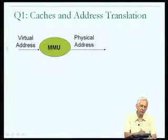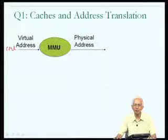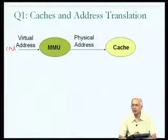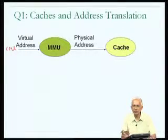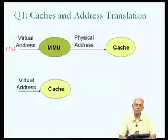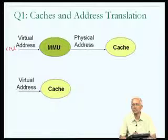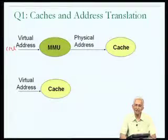If the cache uses virtual addresses, on a cache miss the address must go through the MMU to generate a physical address for main memory. But if the virtual address hits in the cache, the data is returned immediately without address translation. So a virtually-addressed cache can avoid the translation step on hits. A physically-addressed cache always requires translation before the cache can be accessed. These are two distinct design options: physical address cache and virtual address cache.